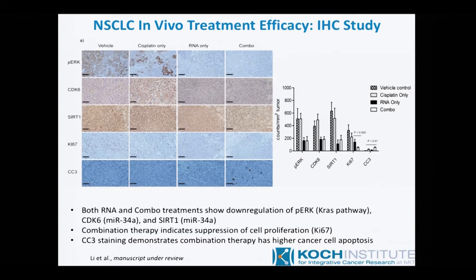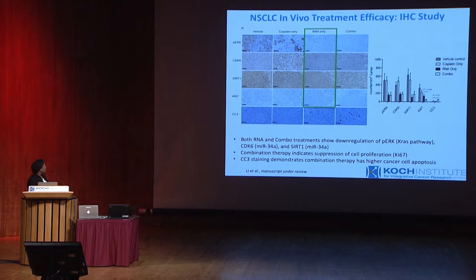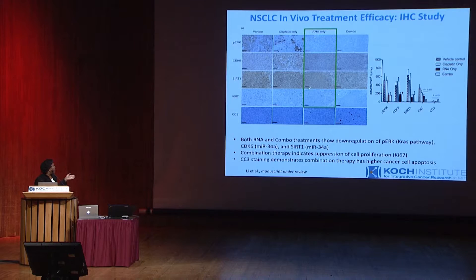We also verified we're affecting the pathways we think we're affecting. We're looking for loss of P-ERK if we've successfully silenced the KRAS gene, and we also look at CDK6 and SIRT1 because we're interested in whether miR-34A is working. All three are lowered—which is what we'd like to see—in the RNA-only and the combination nanoparticle. Cell proliferation in general is lowered when we introduced RNA and even more so with the combination drug, and most importantly, cell death is greatly enhanced in the combination nanoparticle.